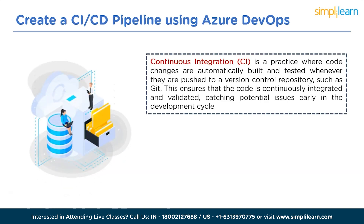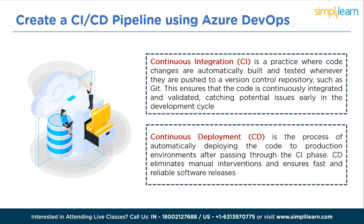Continuous integration is a practice where code changes are automatically built and tested whenever they are pushed to a version control repository such as Git. This ensures that the code is continuously integrated and validated, catching potential issues early in the development cycle. On the other hand, continuous deployment is the process of automatically deploying the code to production environments after passing through the CI phase, eliminating manual interventions and ensuring fast and reliable software releases.